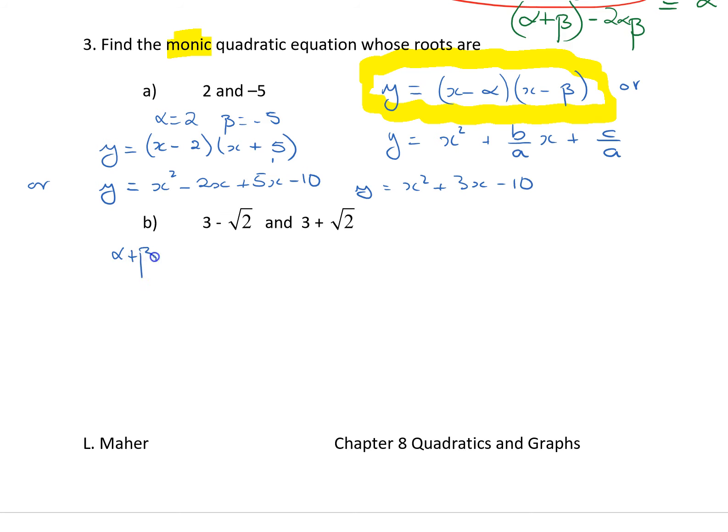Let's do the sum of the roots. So, let this one be alpha, and this one be beta. The sum of the roots is 3 minus root 2 plus 3 plus root 2.